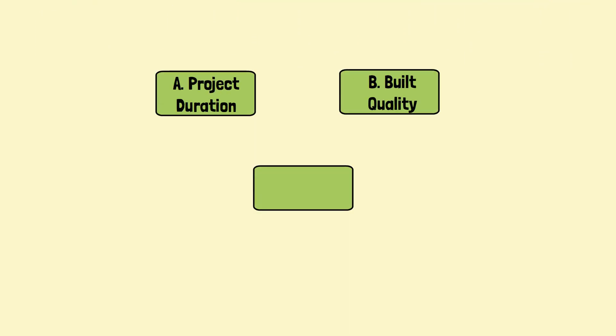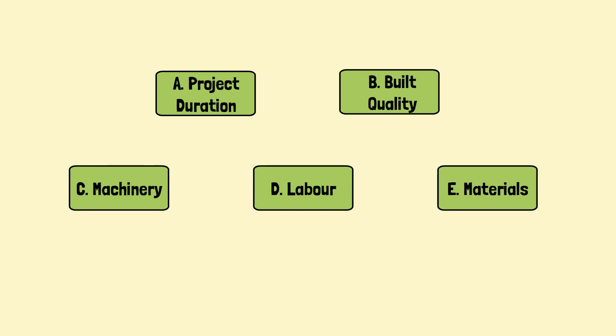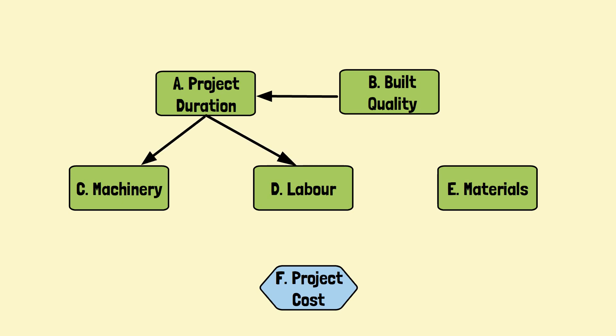The elements like project duration, built quality, labor, machinery, and materials have been identified. The project cost is denoted as the output, and the relationships among them are represented by directed arcs. If there is a quality issue, it will extend the project duration for repair, which will subsequently increase the labor and machinery hours. Also, the repair will require new materials, which are not time-bound. Then all the cost components will be aggregated to generate the project cost estimate.